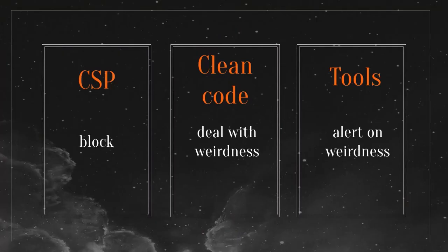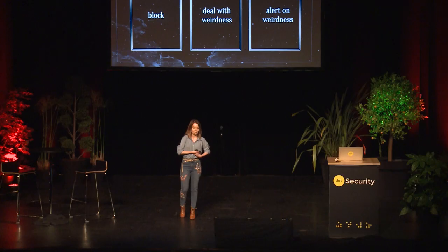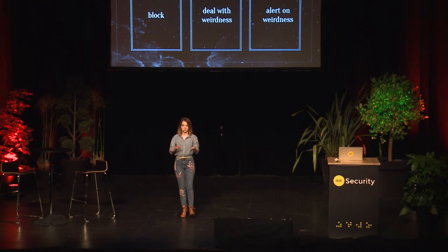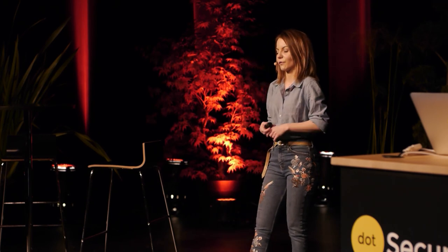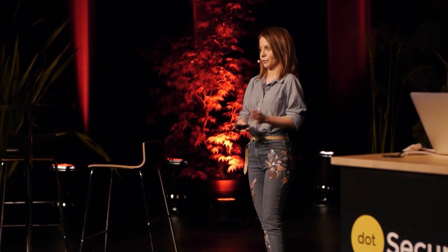A little summary on how to keep sane when dealing with front-end security vulnerabilities. As an engineer working on a security-related task, you should know about the Content Security Policy - it's a very efficient way to block vulnerabilities. You should care a lot about clean code and how you deal with weird situations. And you should care a lot about tools - make sure you are alerted on weirdnesses and that your engineers have the right information available really, really early in the development stages.